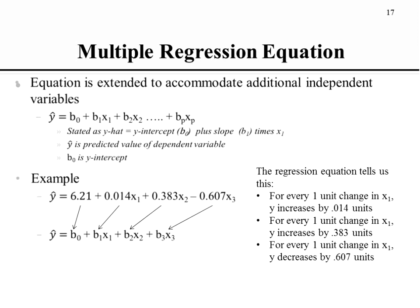The multiple regression equation looks similar to a simple linear regression equation. In simple linear regression it was y-hat equals b-zero plus b1x1. Now that we have multiple independent variables, we add an additional variable set for each. With two independent variables: y-hat equals b-zero plus b1x1 plus b2x2. With three: y-hat equals b-zero plus b1x1 plus b2x2 plus b3x3. The regression equation continues to expand based on the number of additional variables we add.